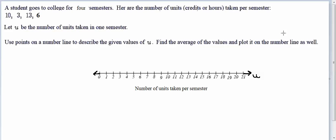Hi. In this example, we're given a situation in which a student goes to college for four semesters. And then we have listed the number of units in credits or hours the student took per semester. So they took 10 credits one semester, 3 the next, then 13, and then 6.